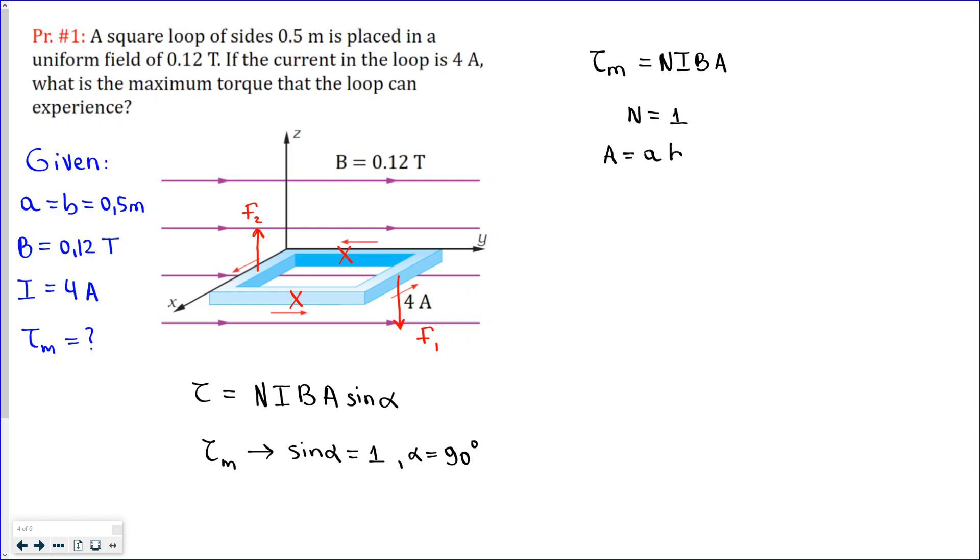Area is the multiplication of the sides, so it is 0.5 multiplied by 0.5, that is 0.25 meters squared. All we need is just to substitute the numbers into the equation. Torque maximum will be equal to 1 multiplied by current, which is 4, the magnetic field strength 0.12 multiplied by area 0.25, and the answer is 0.12. The unit for the torque is newton times meter.